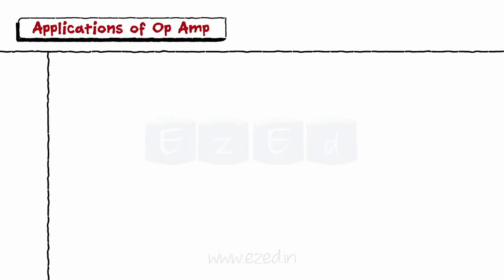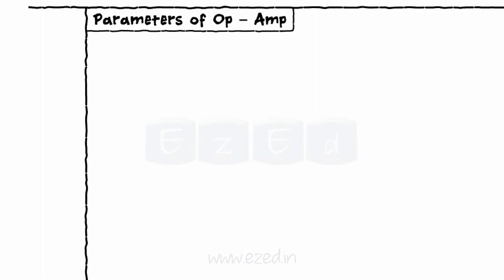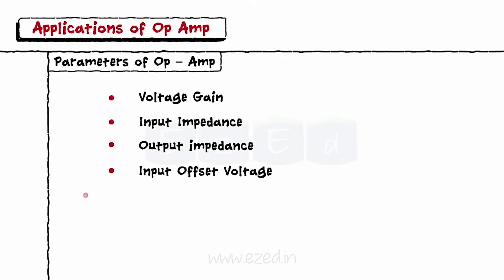Moving forward, we learn different parameters of Op Amp: voltage gain, input impedance, output impedance, input offset voltage, input offset current, input bias current, and bandwidth.